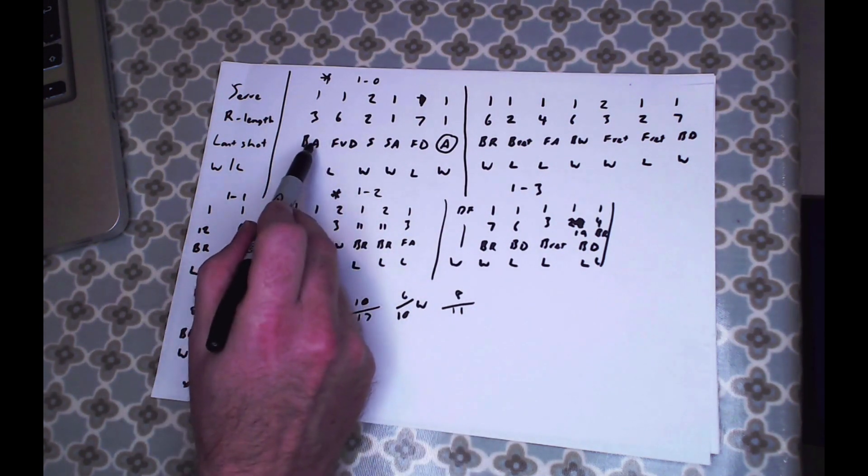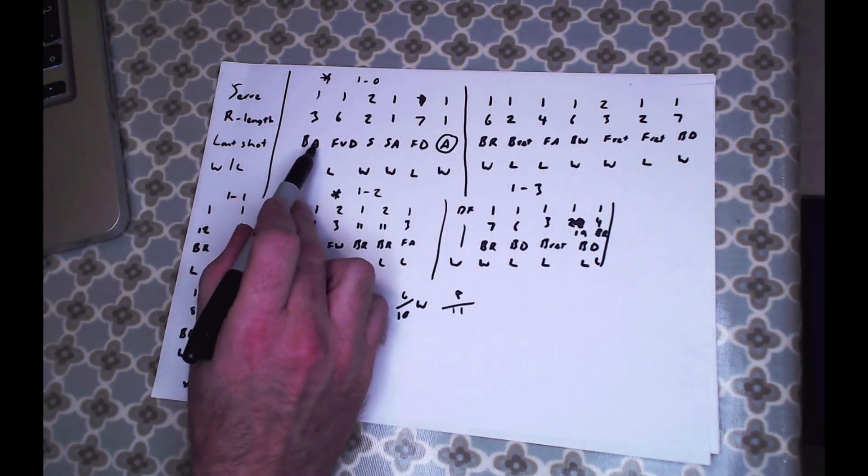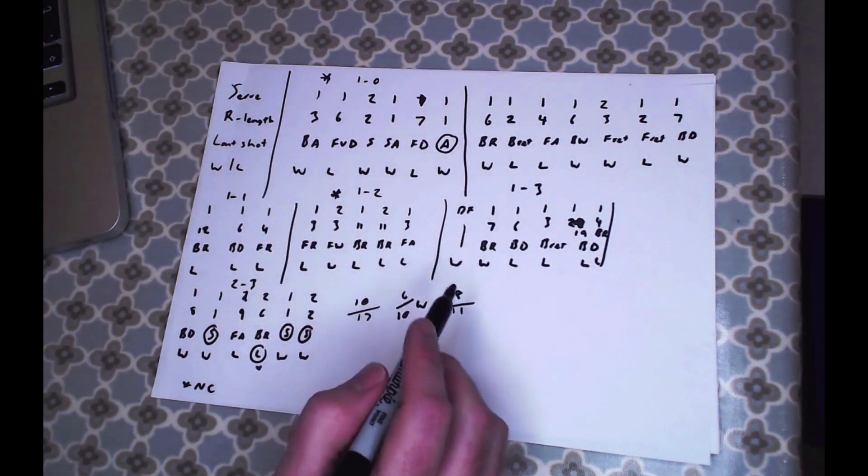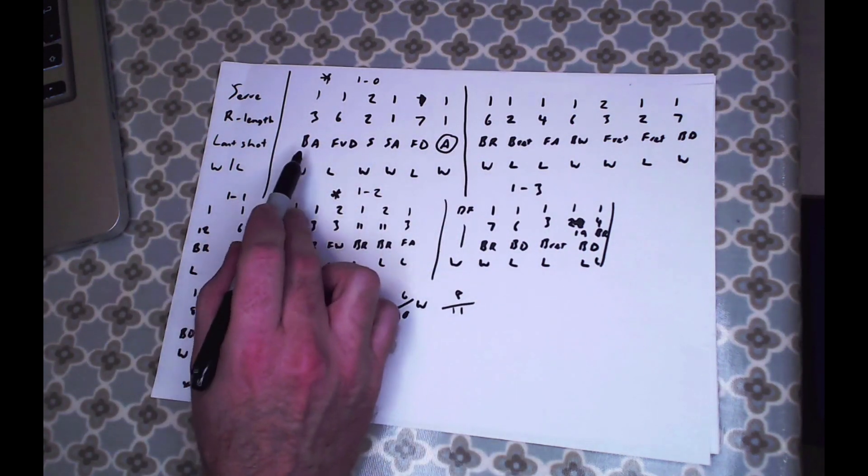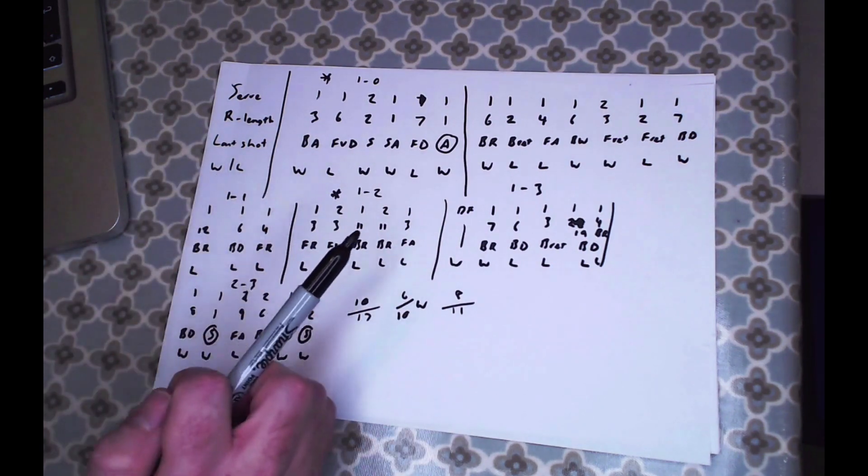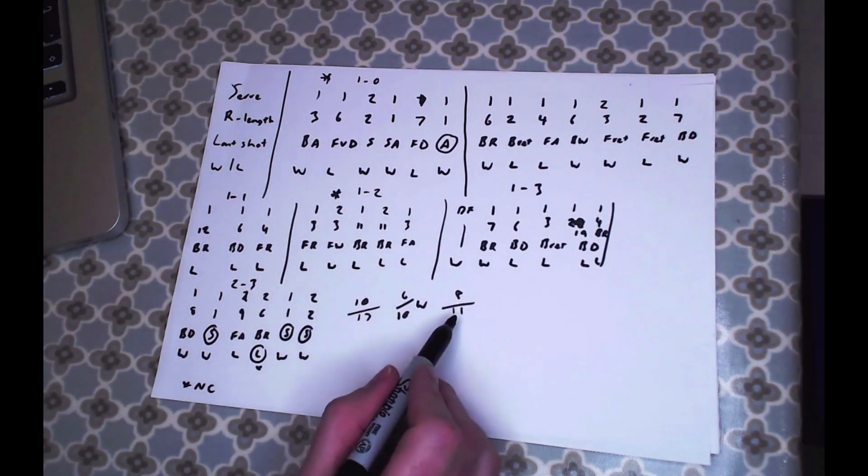I also was interested in the phase of play when the last shot was hit. So A was attack, D was defense, and R was in a neutral or rally phase. I'm interested always with players in what phase of play was the last shot hit in and what was the success rate.